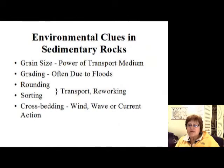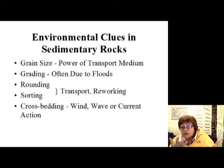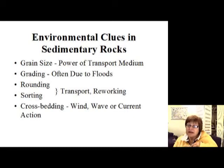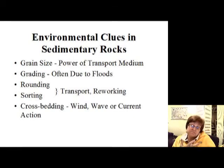Altogether, here are the environmental clues we can get from sedimentary rocks. Grain size tells us about the transportation medium and how far sediment traveled. Grading can depend on the energy environment — for example, whether there was a flood. Sorting and rounding give information about whether material was reworked or how far it was transported. Cross-bedding tells us if sediment was carried by wind, wave, or current action.